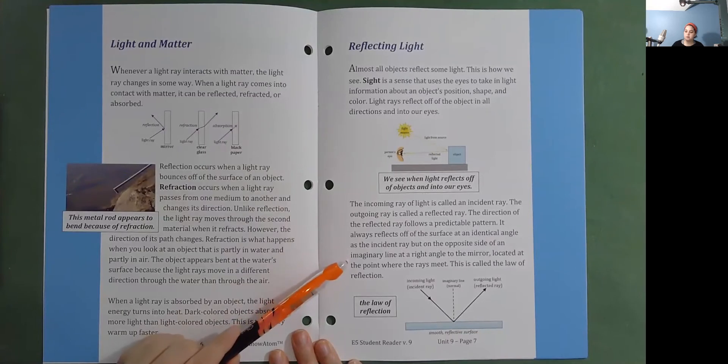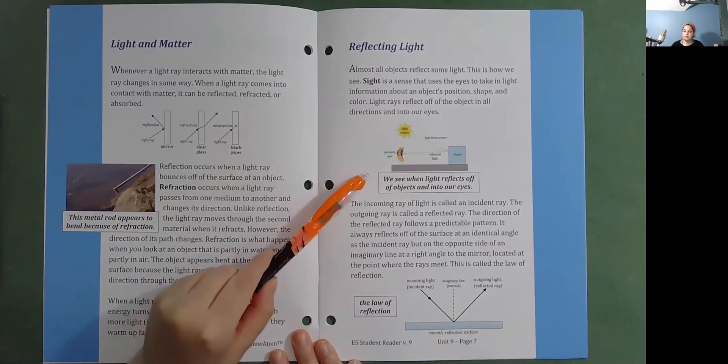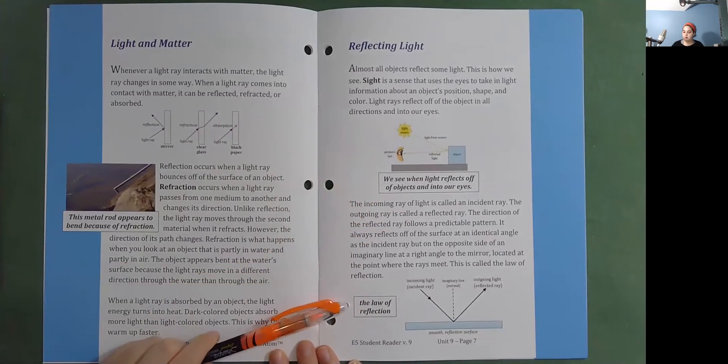This is called the law of reflection. We see when light reflects off of objects and into our eyes. The law of reflection.